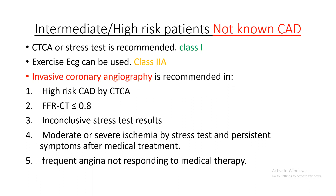Exercise ECG is class 2A because of its low sensitivity and specificity. Invasive coronary angiography is recommended if results show high-risk coronary artery disease by CT coronary angio, FFRCT less than 0.8, or moderate to severe ischemia. The same mindset applies: use the clinical decision pathways, perform structured risk assessment, categorize the patient, and decide what to do next — discharge, invasive coronary angiography, or stress testing or CT coronary angio for intermediate pre-test probability.